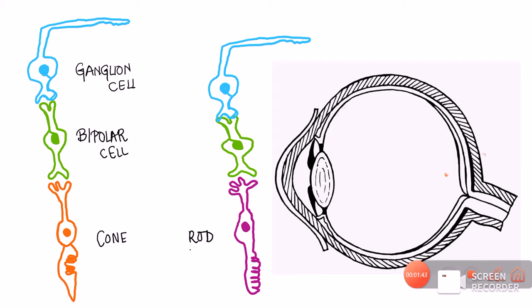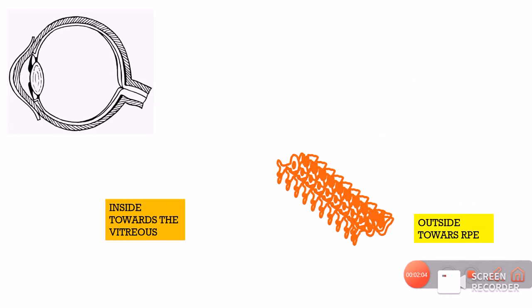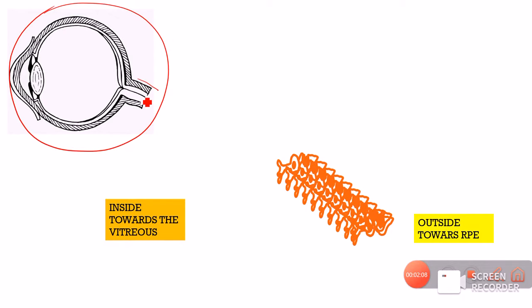The photoreceptors are located in the more outer region of the retina. The cones and rods are outermost, then we have the bipolar cells, and then the ganglion cells. Anything towards the outside means towards the retinal pigment epithelium.